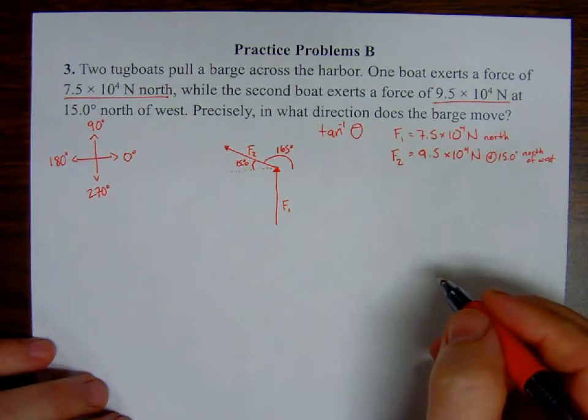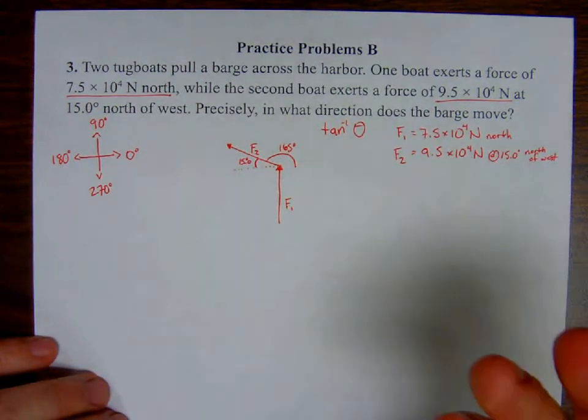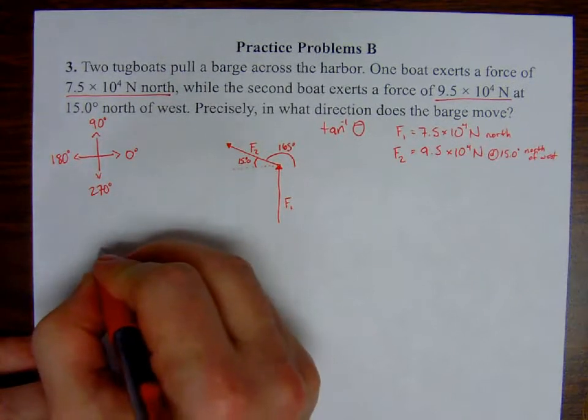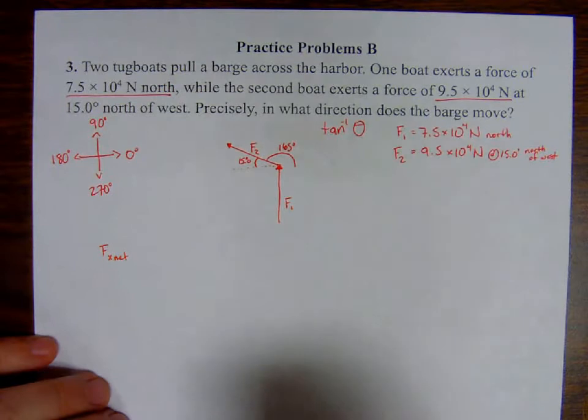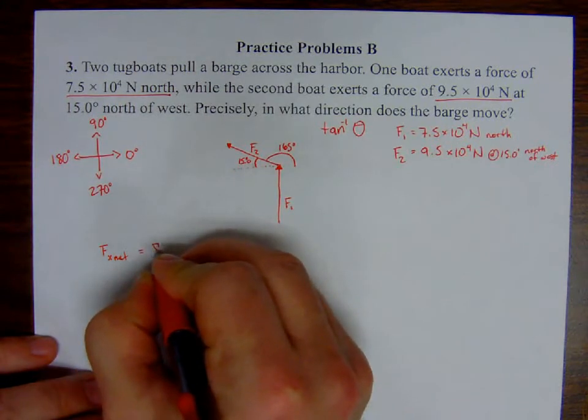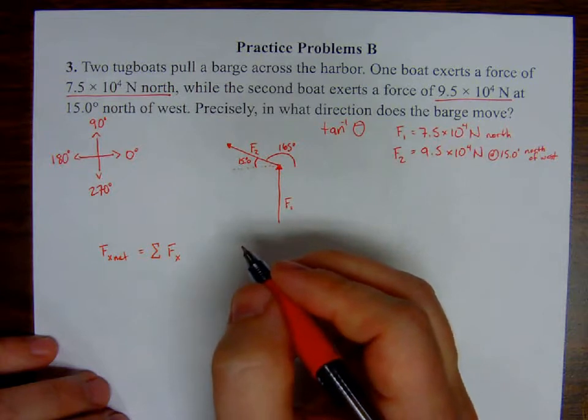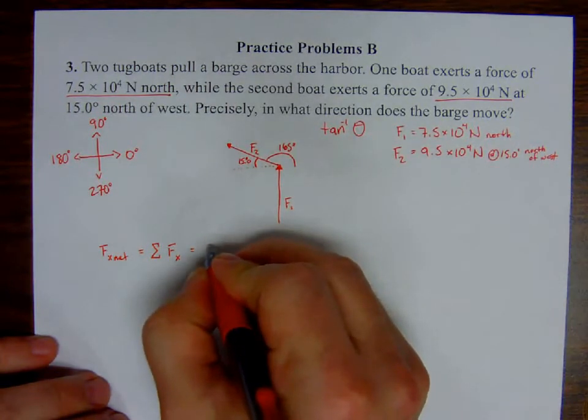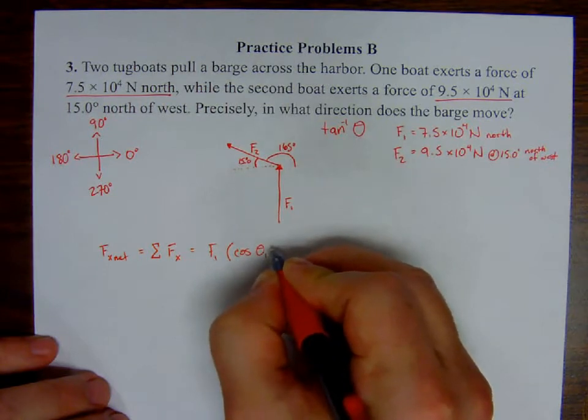So the first thing I want to do is pick one of the components to actually do, x or y. It doesn't matter, so I'm just going to stick with x. So I'm going to need to calculate the force only in the x component, but net, right? The net force in the x component, in the x direction. That's going to be the sum, the sum of all forces in the x direction, right? So how many forces are in the x direction?